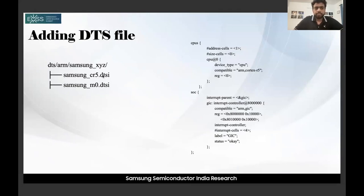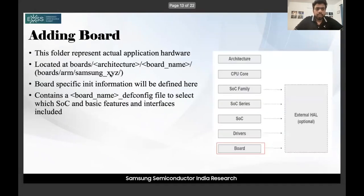Here is a sample DTS file showing how to mention CPU details and SoC information. Interrupt controller details are mentioned for a GIC, and CPU is Cortex R5. Inside dts/arm/samsung_x5, we can have two different DTSI files — one for CR5 and one for M0. Since we're using CR5, you mention it in the board file at compile time, and accordingly the header file is generated.